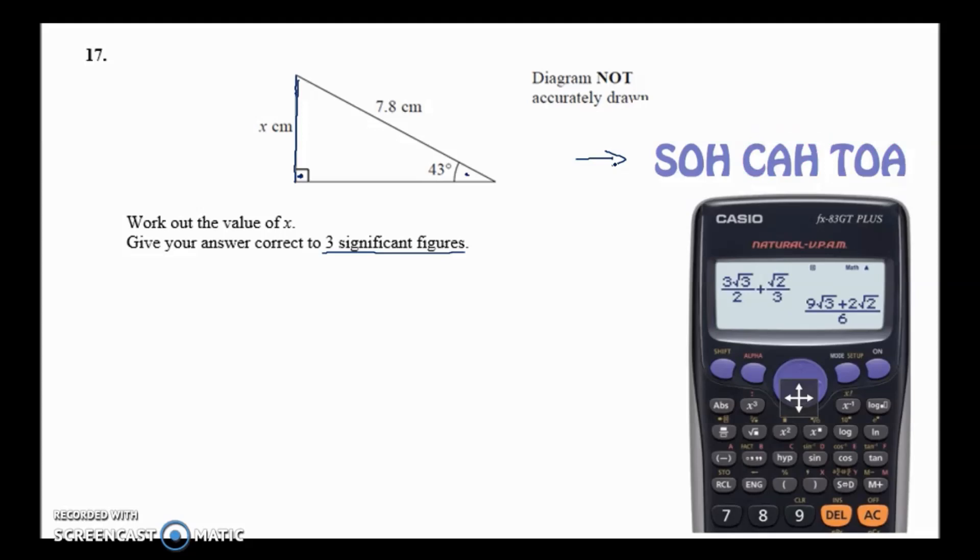The first step is to label the triangle with O, A, and H, because those are the letters that are in SOH CAH TOA. We've also got S, A, C, and T and they refer to the buttons on your calculator.